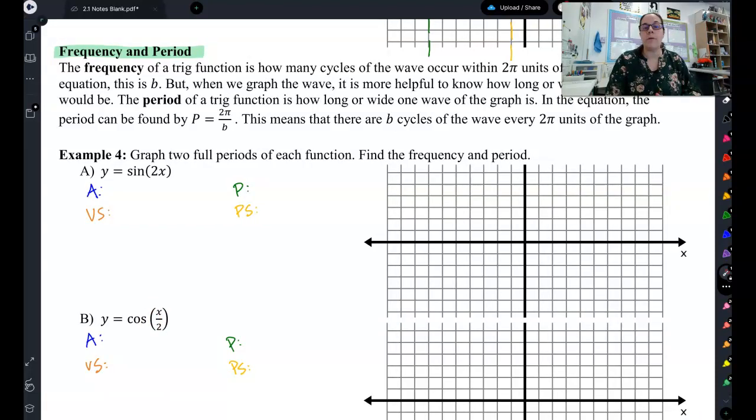So that's your frequency. The frequency is the number in the equation. Now, to get from the frequency to the actual period, we do this equation. We do 2 pi divided by the number in the equation. Basically, this is 2 pi over your frequency, over the number in the equation. And that gives you how long your wave should be.